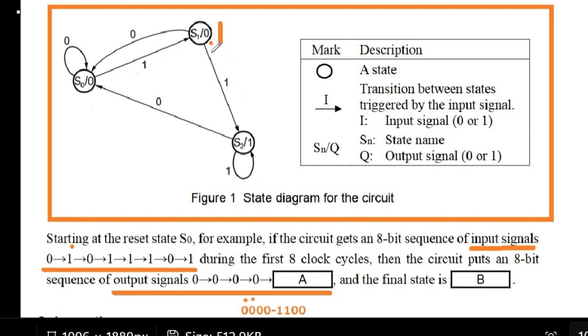So now we are in state 1. Next, the input signal is saying 0. So if it's 0 as the input, we go back to state 0, and the output is, again, 0.